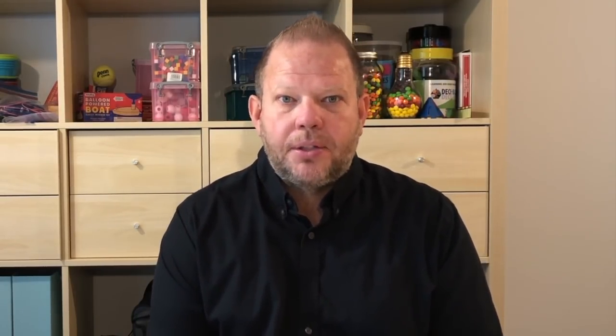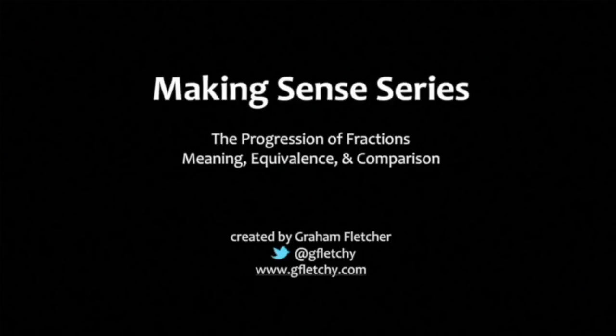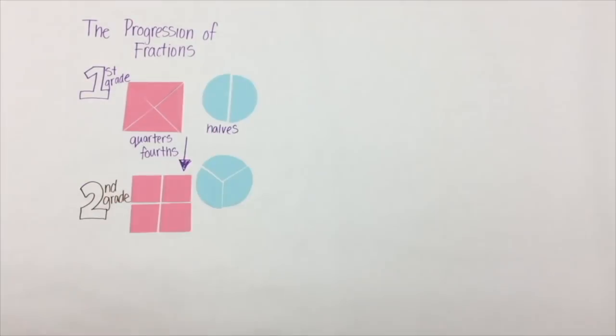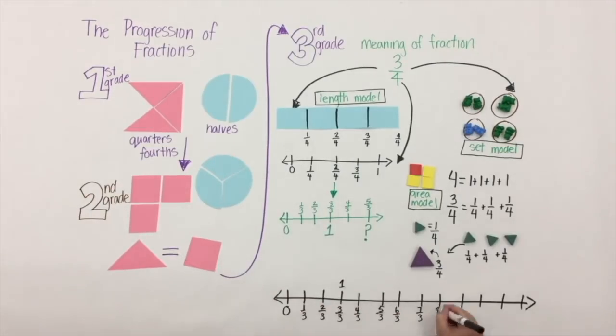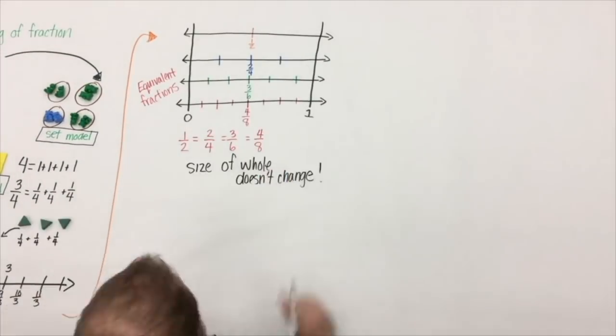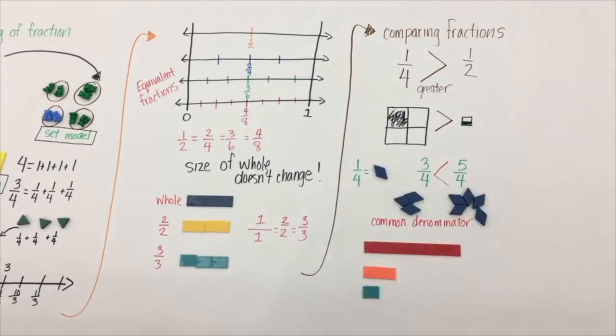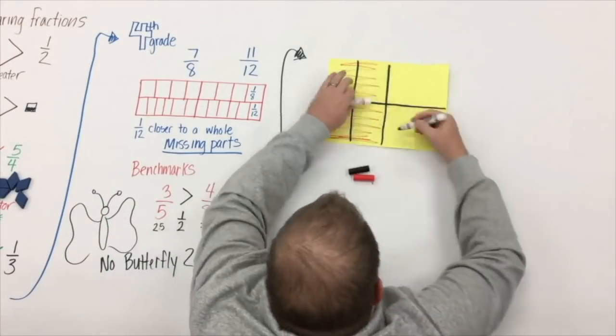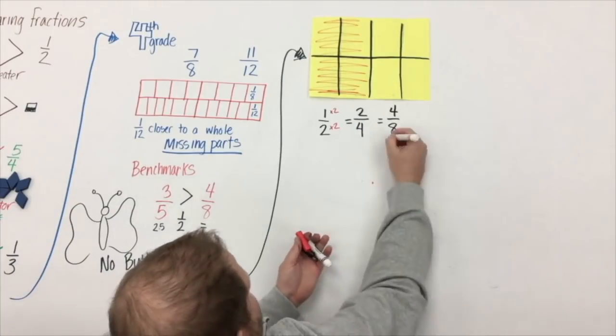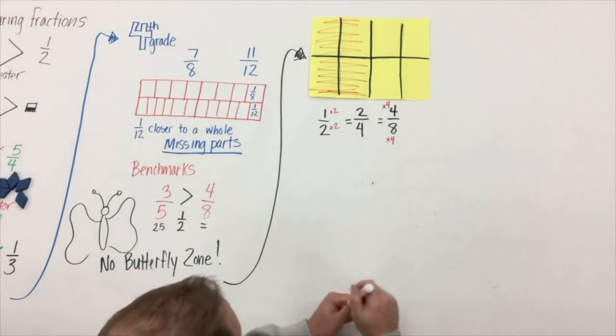In an effort to support my work in terms of progressional thinking, I created a series of videos — there are five of them right now. But there's one video that for me has remained incomplete: the progression of fractions video that I released back in 2016. In that video, I talk about what fraction understanding looks like in first grade, second grade, all of third grade, and the beginning of fourth grade — tackling the meaning of a fraction, comparison of fractions, and equivalency of fractions. And as I've started working on this video, it's helped me make solid connections about what we learn with whole numbers and how we can apply those to fractions.